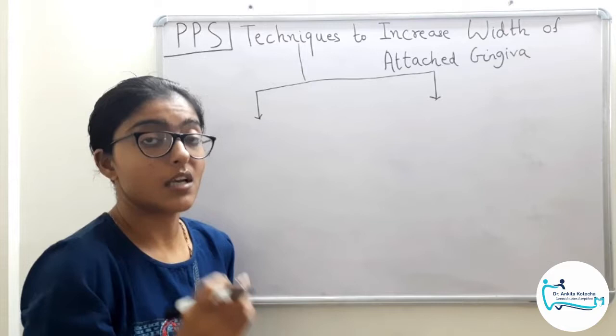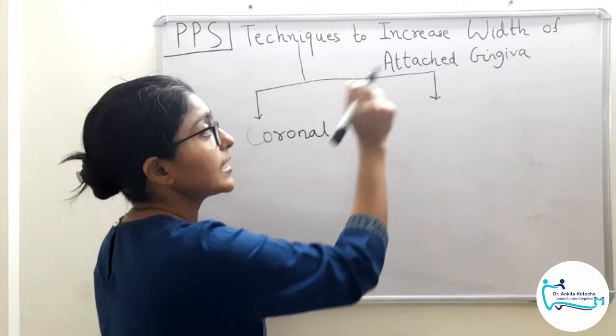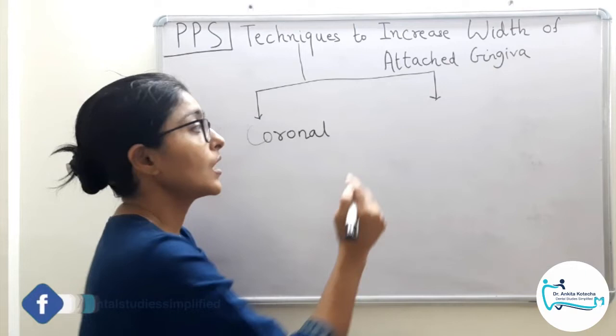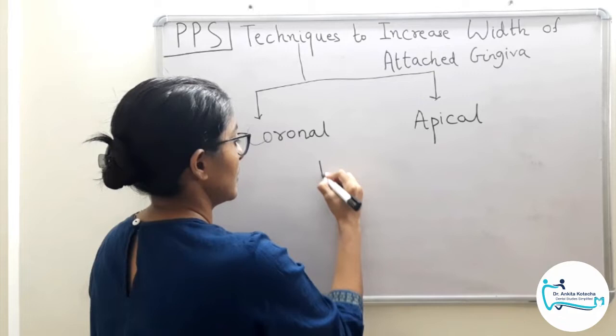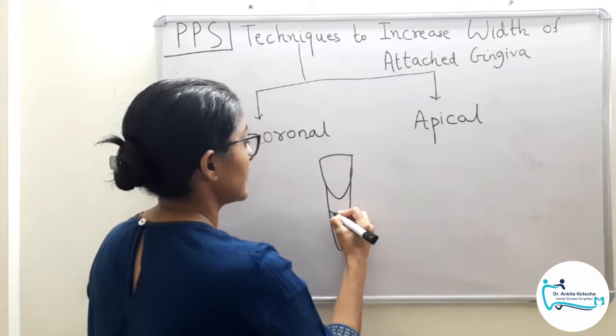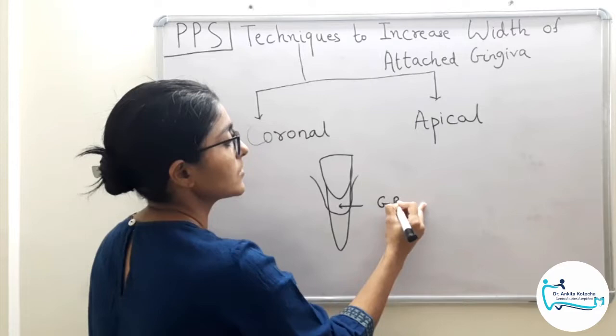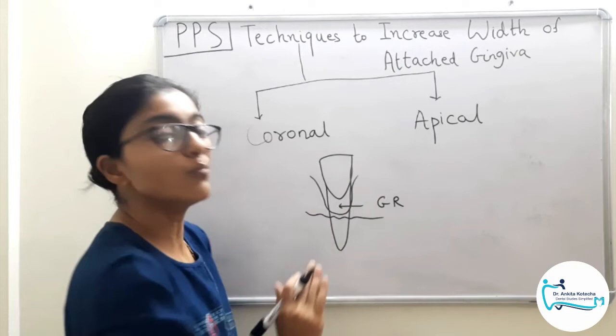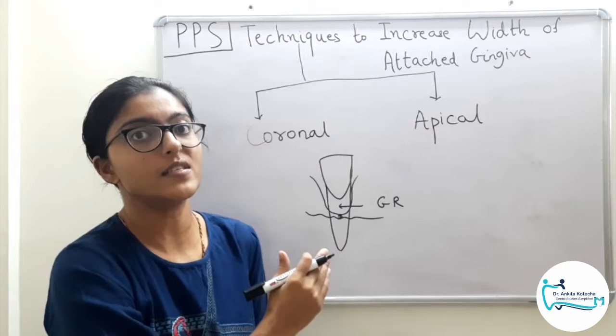One type involves increasing the width of attached gingiva coronal to the recession, and another involves increasing it apical to the recession. This is the gingival recession — that is, root exposure — and this is the mucogingival junction.